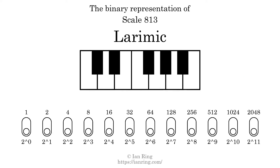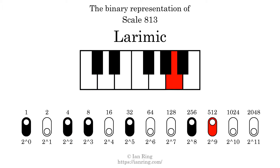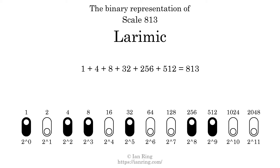The binary representation of this scale is determined by mapping tones of the scale to binary digits. Each binary digit represents a power of 2. To get the scale number, we add the powers of 2 together. The powers of 2 that are present in the scale, all added together, equals 813. That is why the scale number, in decimal, is 813.